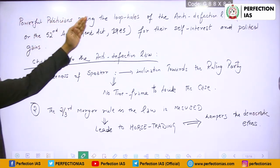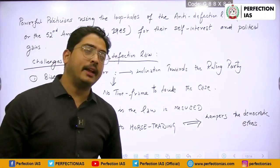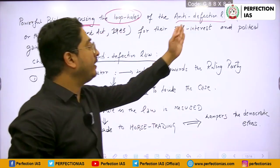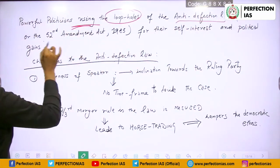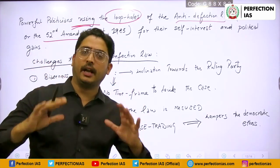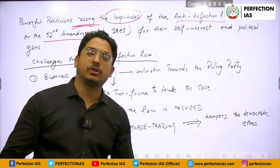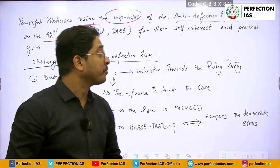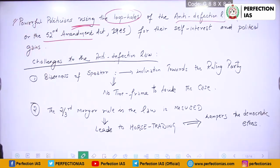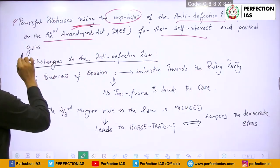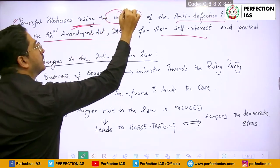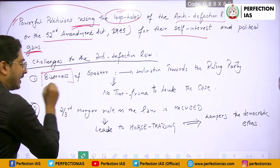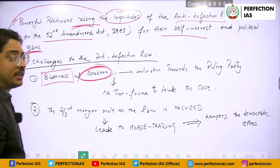First: powerful politicians using loopholes. When I write anti-defection law, I put in brackets '10th Schedule or the 52nd Amendment Act 1985' — no need to write separately where it came from, everyone knows. The powerful politicians use the loopholes for their self-interest and political gains. Now, what are these challenges and loopholes? We'll discuss them for coherence.